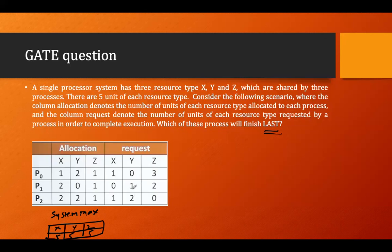Our task is to find the safe sequence. Let's calculate the availability. From resources X, Y, and Z — I have allocated one, two, and two instances. The maximum is five, so for X: zero available; for Y: one available; for Z: three available. So my available vector is zero, one, three.